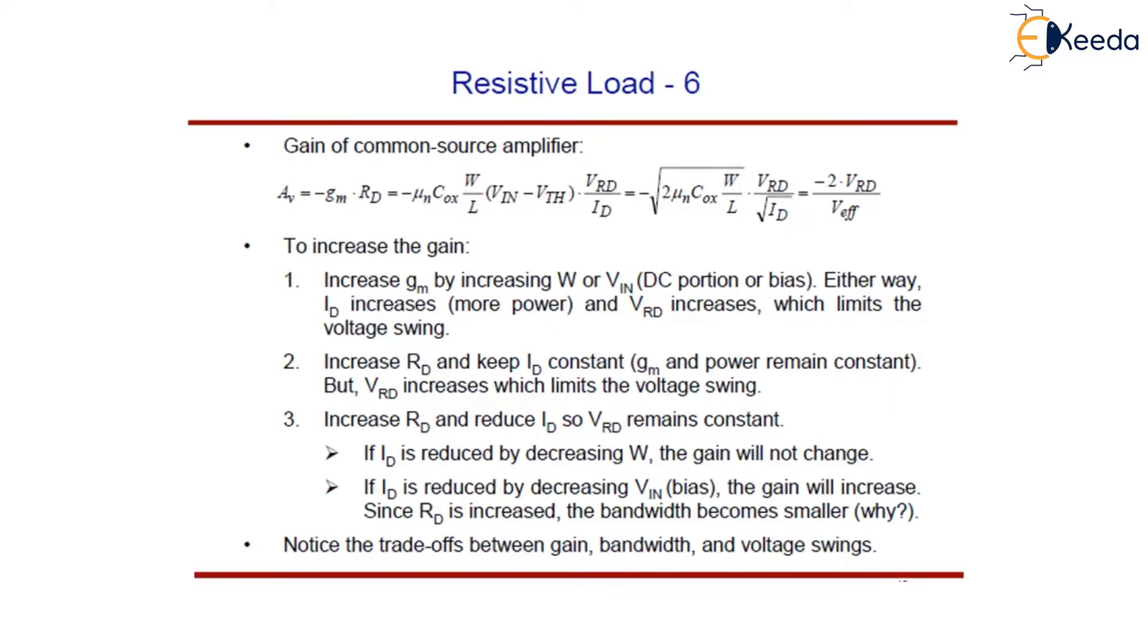We have already discussed that the voltage gain of the common source stage is given by -gm Rd. This can be written as -√(μn Cox W/L) (VIN - VTH) times VrD/Rd, where VrD is the voltage drop across Rd. This can be further written as -√(2 μn Cox W/L) VrD/√Rd, which can also be written as -2VrD/VDsat.